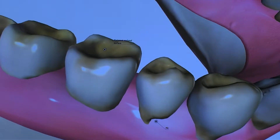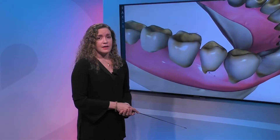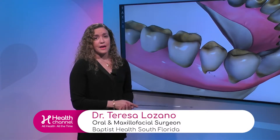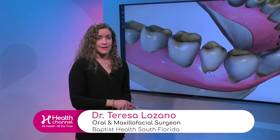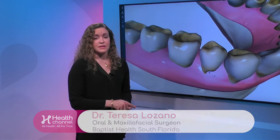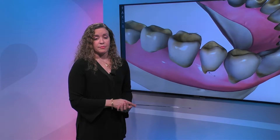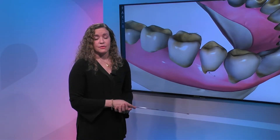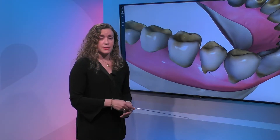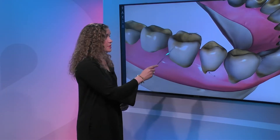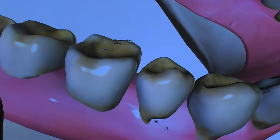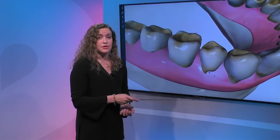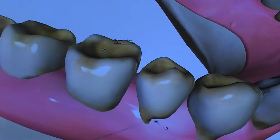It's important to differentiate tooth decay from dental erosion. Dental erosion is caused by acids not produced by bacteria, like sugary beverages, carbonated beverages, vomiting, and so forth. Then there's attrition, which is the wear and tear of the occlusal surface of the tooth from excessive grinding. Also, if you brush too hard you can cause recession of the gums.